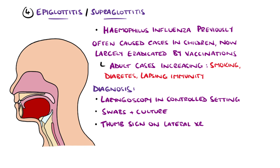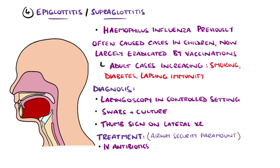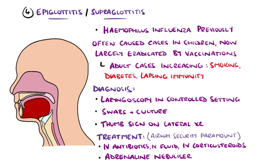Second line imaging involves a lateral X-ray, which may show an oedematous and swollen epiglottis called the thumb sign. Management generally involves securing the airway if compromised, possibly through intubation, intravenous antibiotics like ceftriaxone, intravenous fluids, and corticosteroids, as well as adrenaline nebulisers as required.